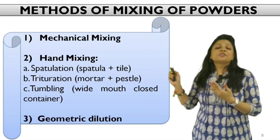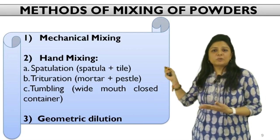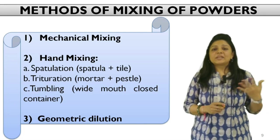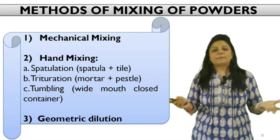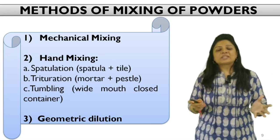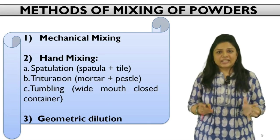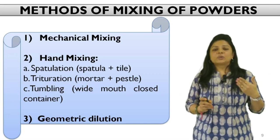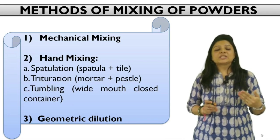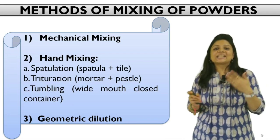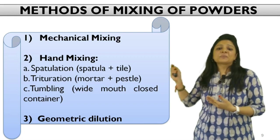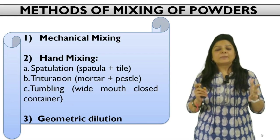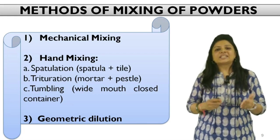What are the different methods by which you can mix the powders? First is mechanical mixing, where you use mechanical equipment and mixers to mix the powder uniformly — this is possible in bulk quantity on a large scale. Then there is hand mixing for small-scale preparation, using techniques like spatulation (where a spatula is used), trituration (where a mortar and pestle is used), or tumblers where tumbling of the ingredients takes place.